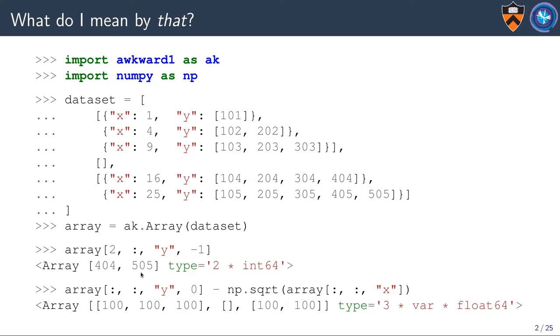Now suppose we want to do some mathematics on it. First, we do another slice, taking all of the inner lists, field y, element 0 within the field y lists. I want to subtract off the square root of the equivalent for x. Then we have 101 minus the square root of 1, 102 minus the square root of 4, 103 minus the square root of 9, and we get 100, 100, 100. But we still have the structure of the thing that this came from.